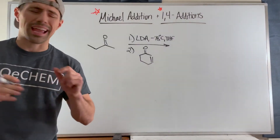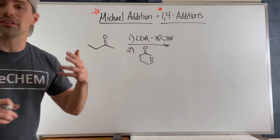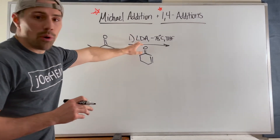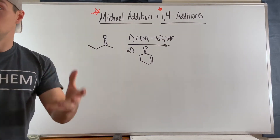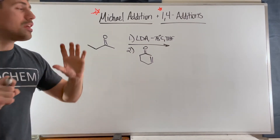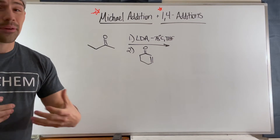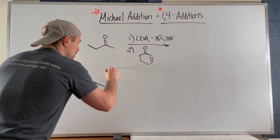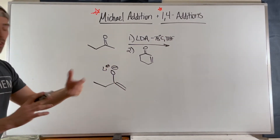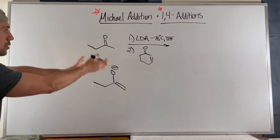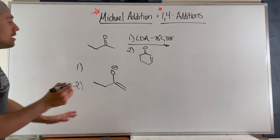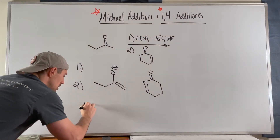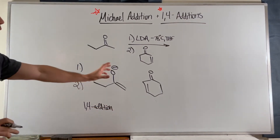Let's look at a Michael addition. In this first step, we have an asymmetric ketone with two unique alpha carbons. We see a big bulky base — LDA, tert-butoxide, or similar — with very cold conditions. This tells us we're going to make the kinetic enolate by deprotonating the most easily accessible position. So step one generates this enolate; you can keep the lithium counter ion or drop it.